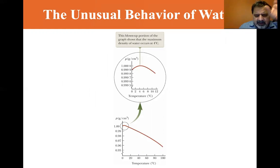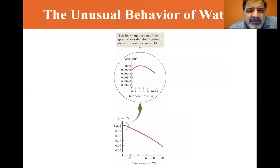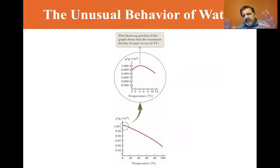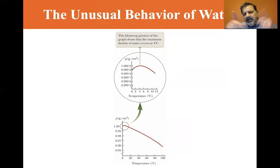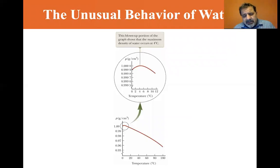Now let's look at the unusual behavior of water. Most things decrease in volume as you decrease the temperature, but this blown-up portion of the graph shows that the maximum density of water occurs at four degrees Celsius. Before four degrees, as you cool water the cooler water sinks to the bottom and the warmer water rises to the top, creating circulation until it's all uniform. Then as it falls below four degrees, water becomes less dense. That's why ice floats — ice is less dense than liquid water.